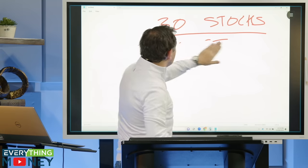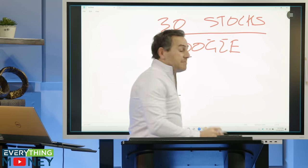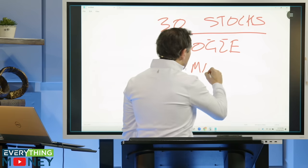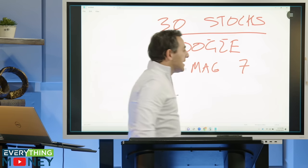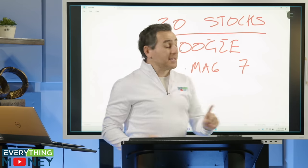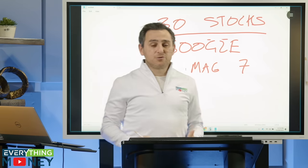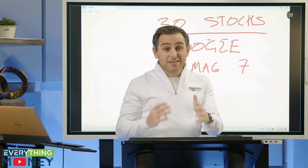Stock number two, Google. Google is probably the most reasonably valued of all the magnificent seven. It's reasonably valued. I believe that I can justify Google's price today. However, I'm probably not going to get an outsized return for it. So am I trying to be a little greedy? Maybe so, but that's where I stand on Google.